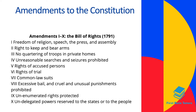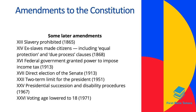There were also later amendments passed after the Bill of Rights. These include the prohibition of slavery in 1865, and in 1868 former slaves were made citizens, including equal protection and due process clauses. The federal government was granted the power to impose income tax in 1913, and the direct election of the Senate was established also in 1913. A two-term limit for the president was imposed in 1951, presidential succession and disability procedures were established in 1967, and the voting age was lowered to 18 in 1971.